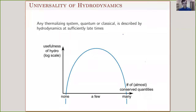For some background: any interacting system, whether quantum or classical, will be described by some form of hydrodynamics at late times. Hydrodynamics is a late-time effective description of basically any interacting system. Which type of hydrodynamic theory to use just depends on the global symmetries — specifically the number and type of conserved quantities in your system.